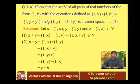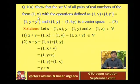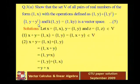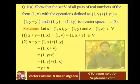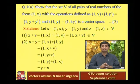Next question: show that the set V of all pairs of real numbers of the form (1, x) with operations defined by (1, y) + (1, y') = (1, y + y') and k·(1, y) = (1, ky) is a vector space. To prove this we need to verify 10 conditions: the first 5 are for vector addition and the next 5 are for scalar multiplication.